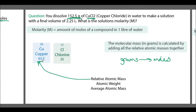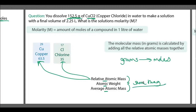Copper has a relative atomic mass of 63.5 and chlorine has a relative atomic mass of 35. Some people use the term 'relative atomic mass,' others use 'atomic weight' or 'average atomic weight,' but all of these mean the same thing. Once we have the atomic masses for both elements, we calculate the molecular mass.